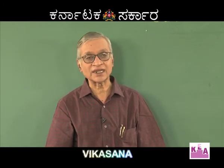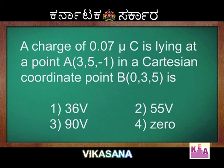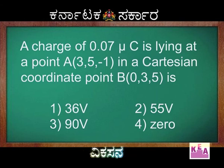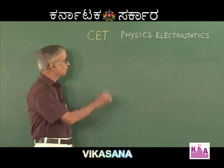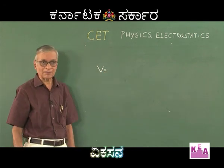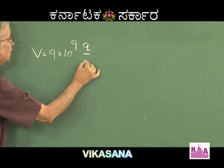Let me illustrate it by taking the very first example. The question is: a charge of 0.07 microcoulomb is lying at a point A with coordinates (3, 5, -1) in a Cartesian coordinate system. The electric potential at a point B is to be found. You have already studied that the potential at a point due to an isolated point charge is given by the formula V = 9×10⁹ × Q / R.